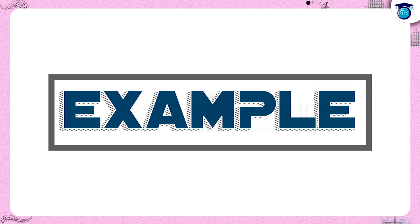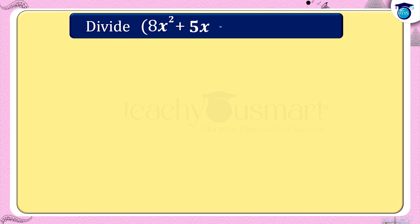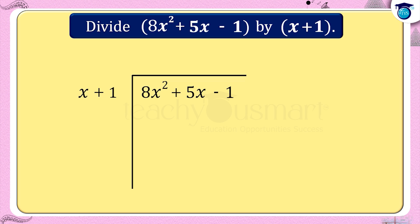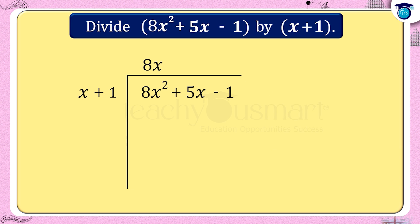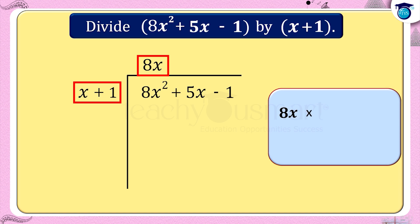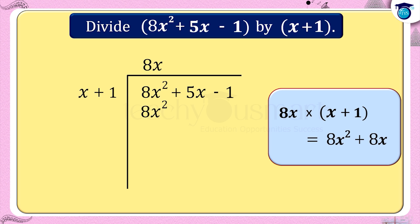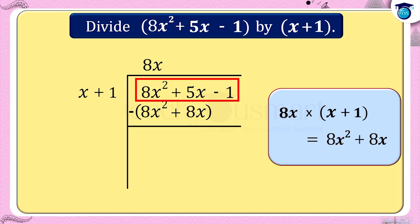Next let's see an example where the remainder is not equal to 0. Divide 8x² + 5x - 1 by x + 1. Divide the first term of the dividend, 8x², by the first term of the divisor, x. That is 8x² ÷ x = 8x, which is the first term of the quotient. Multiplying 8x by each term of the divisor x + 1: 8x × (x + 1) = 8x² + 8x. Subtract this product from the dividend 8x² + 5x - 1. We get the remainder as -3x - 1.